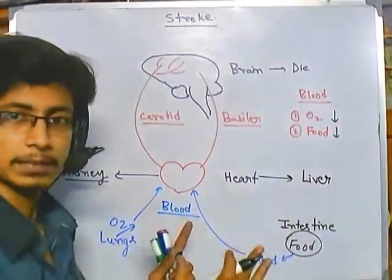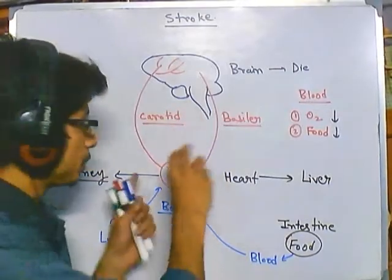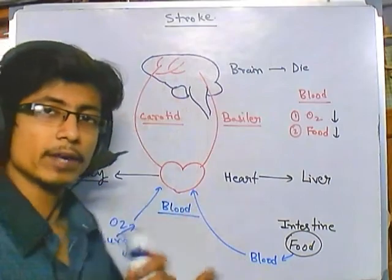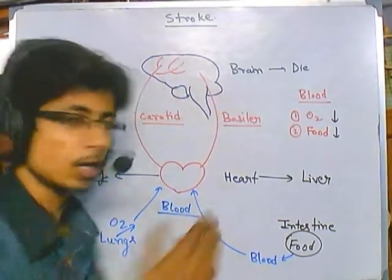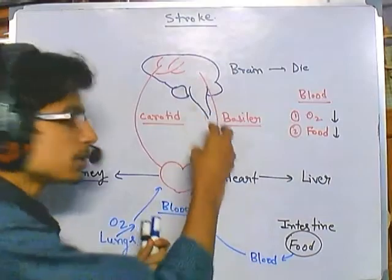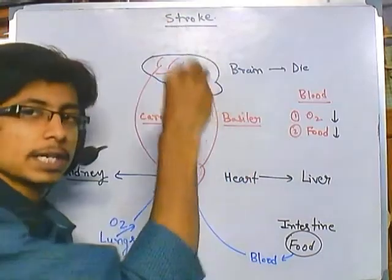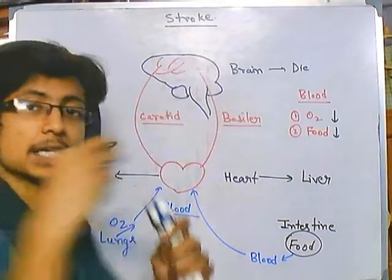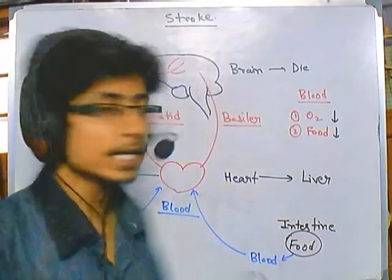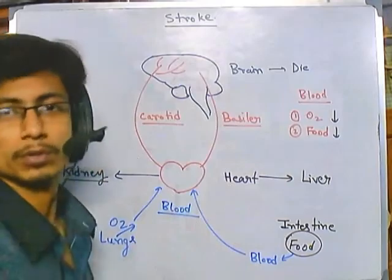When there is a problem between this blood supply between the heart and brain cells, due to any kind of blockage or hemorrhage or any kind of breakage along this journey, there is a loss of blood and lack of oxygen and food supplement to the brain cells. They start to starve and die, and this particular condition is termed as stroke.